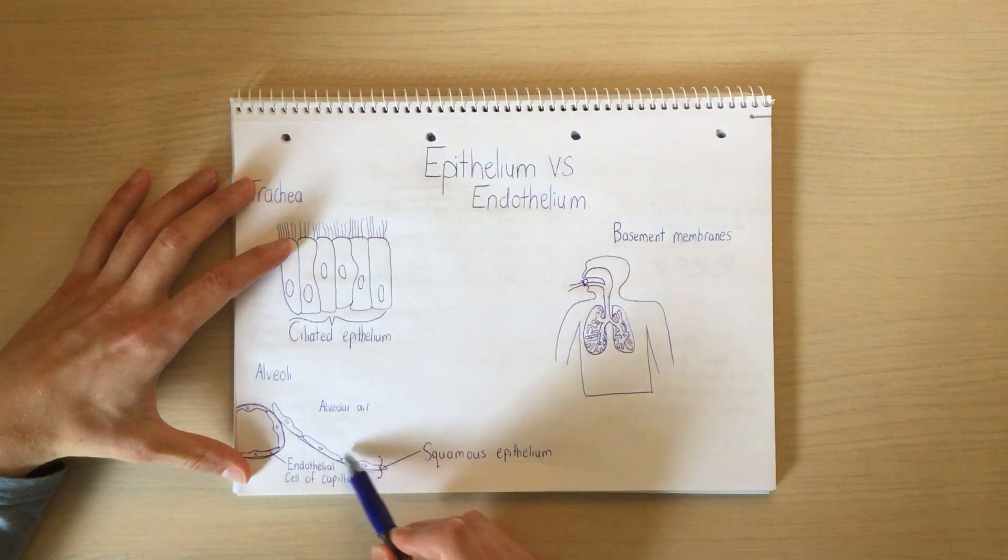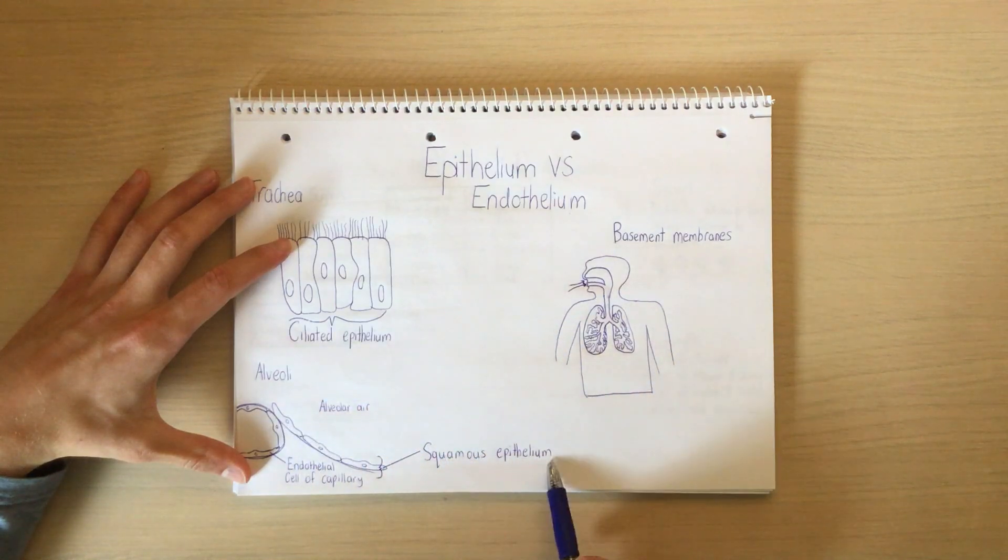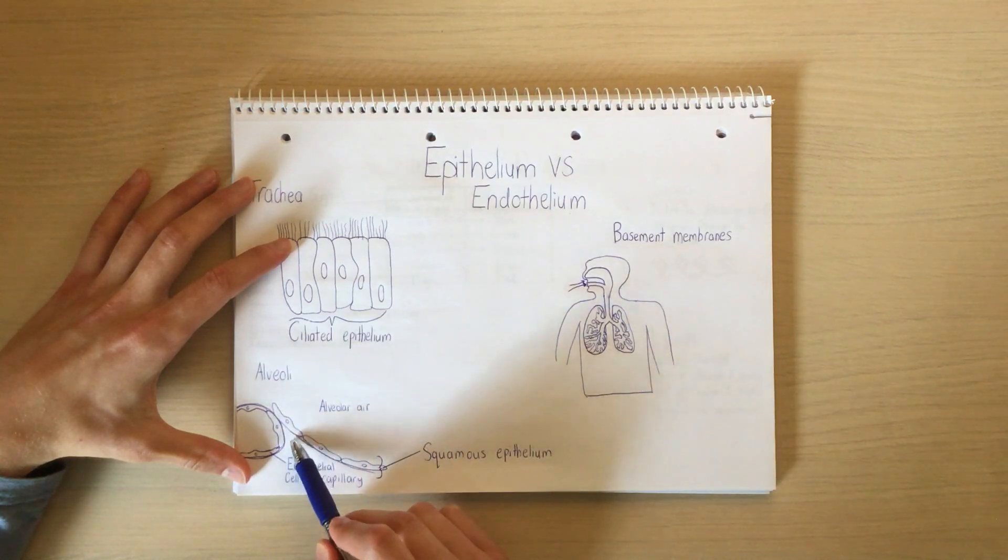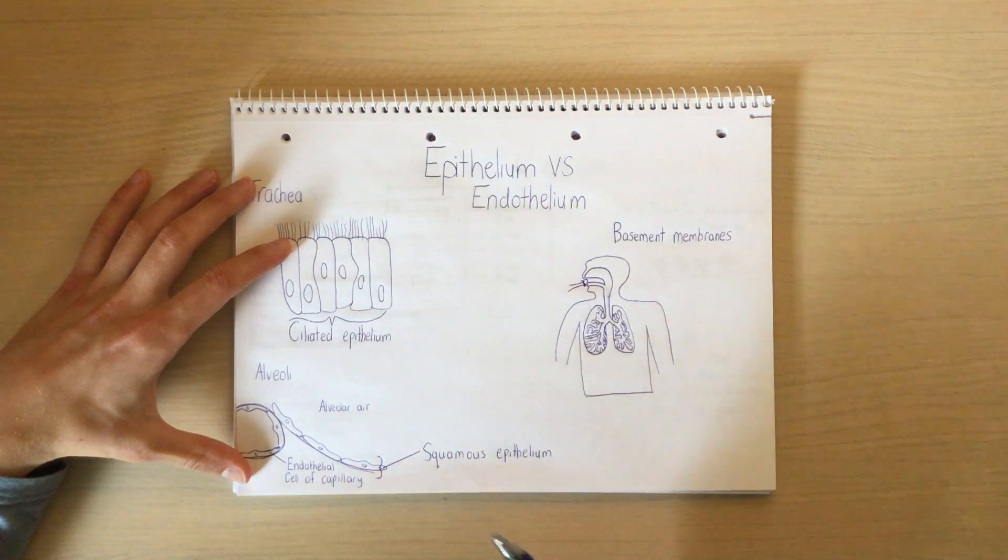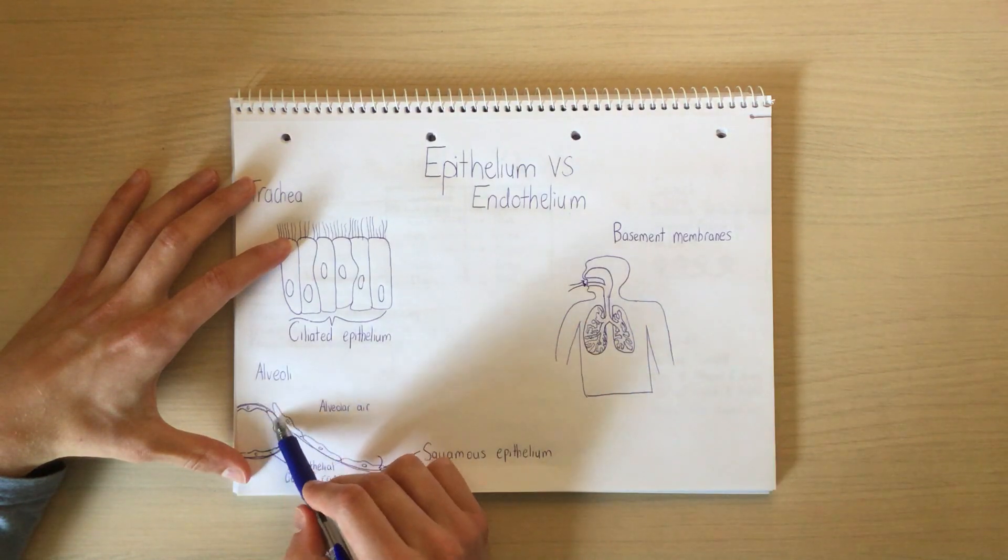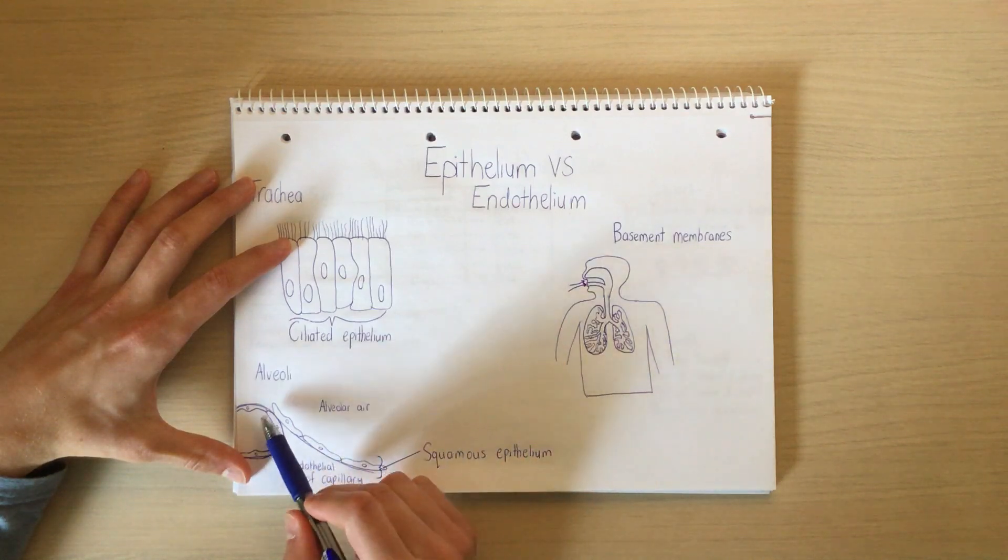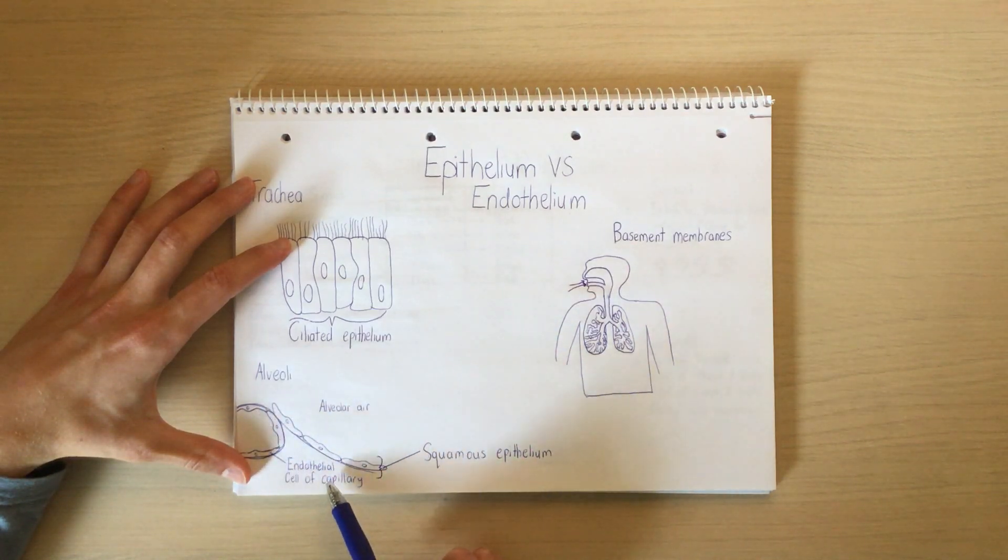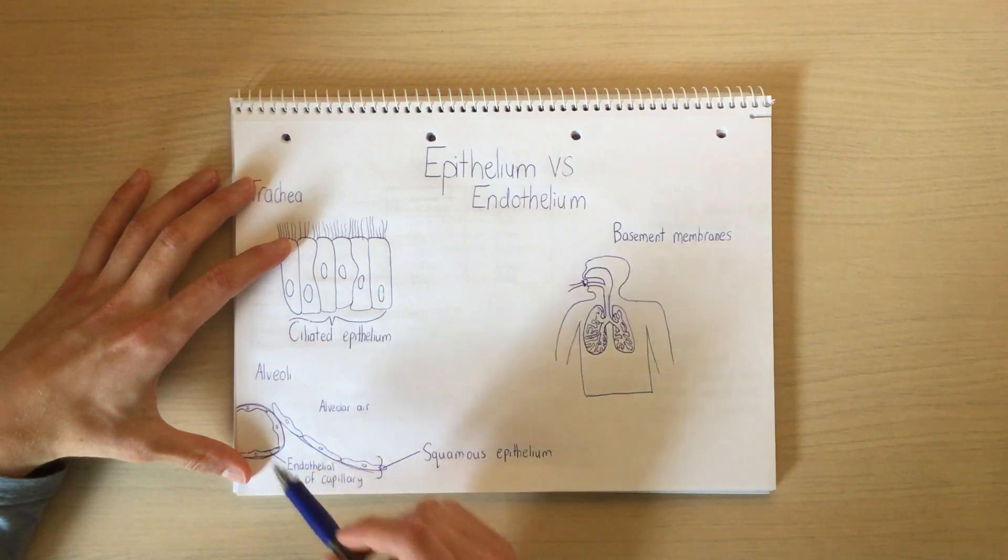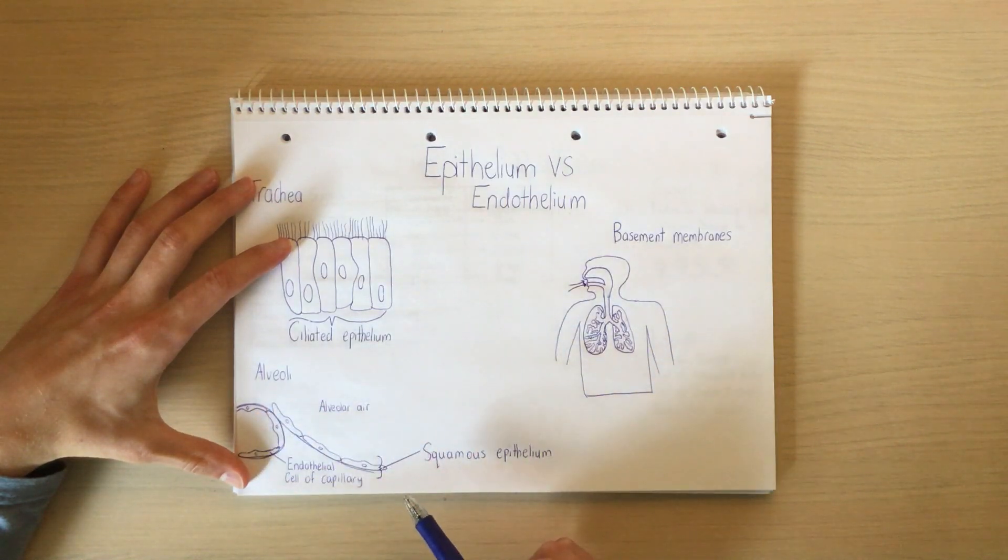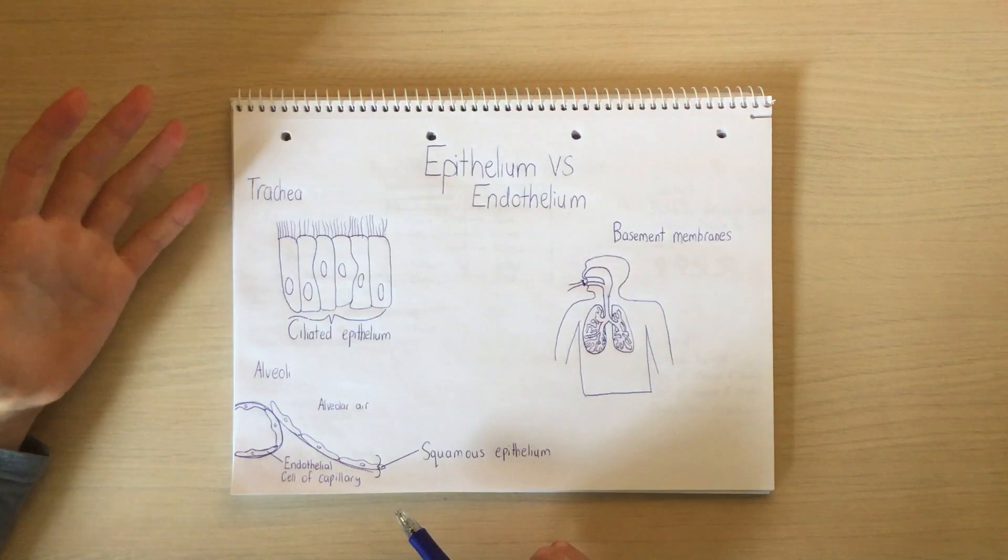Well, it's going to have to go through the inner layer of the squamous epithelial cell, through the basement membrane of that squamous epithelial cell, through the basement membrane of that endothelial cell of the capillary, then through that inner layer of the endothelial cell, and then through the cell surface membrane of the red blood cell. So we have five different layers.